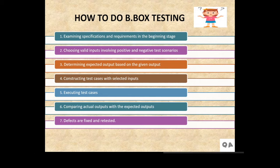Fourth is constructing test cases with selected inputs, and next is executing those test cases. We construct test cases by giving selective inputs and then execute them. Then comparing actual outputs with the expected outputs. And then defects are fixed and retested. In all this black box testing, it is a simple way of testing, but it differs from scenario to scenario in which we have to do it.